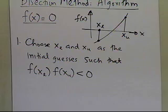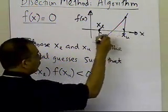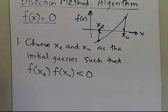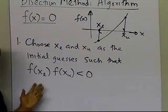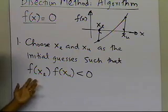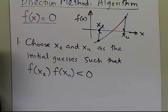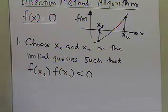This is what's called bracketing the root. You have to bracket the root, because if you don't, you are not following the bisection method. The first step is to choose xl and xu such that f(xl) times f(xu) is less than 0 — meaning the function is changing sign. You must check whether the function is changing sign between those two initial guesses.